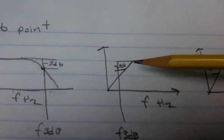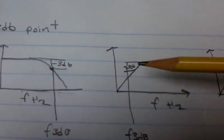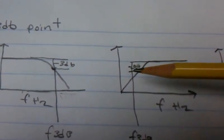In a high pass filter we have our high frequency gain and we're minus 3dB down from that.